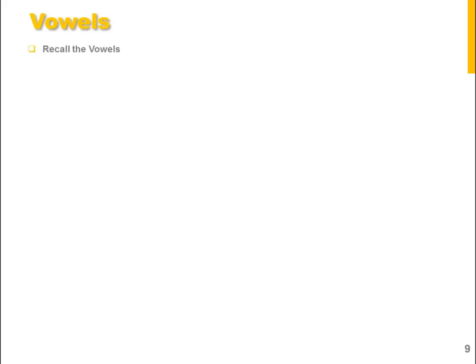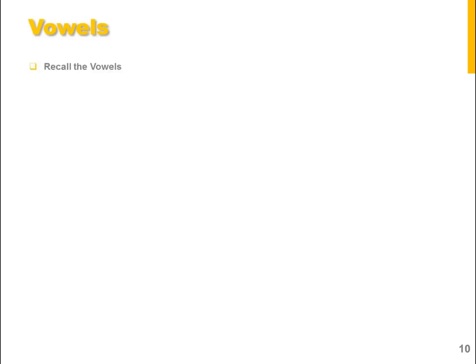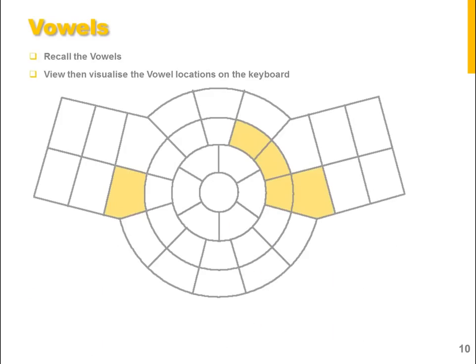Moving on to vowels. Recall, view then visualize their location on the keyboard. So you can see here A E I O U. You will notice that they run right to left in sequence, with the exception of O over on the left side — so that's A E I, over to O, and back to U. Let's look at that again with the area highlighted in yellow: A E I, over to O, and back up to U. That's A E I O U.